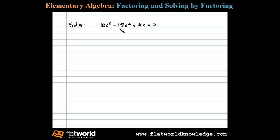Solve negative 10x cubed minus 18x squared plus 4x equals 0. The first thing I notice is that this trinomial has a GCF of 2x, and since the leading coefficient is negative, I'm going to choose to factor out negative 2x first.